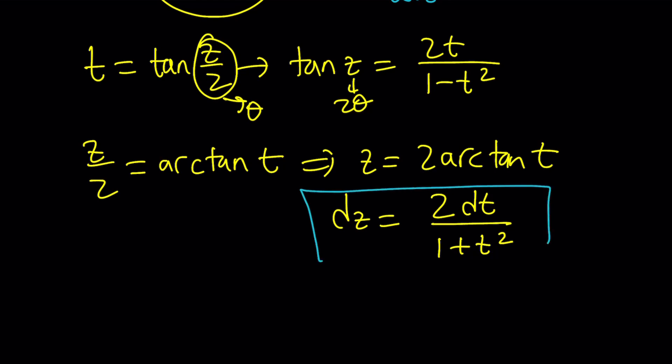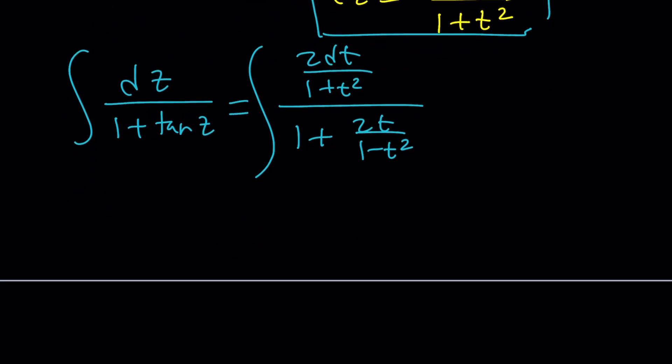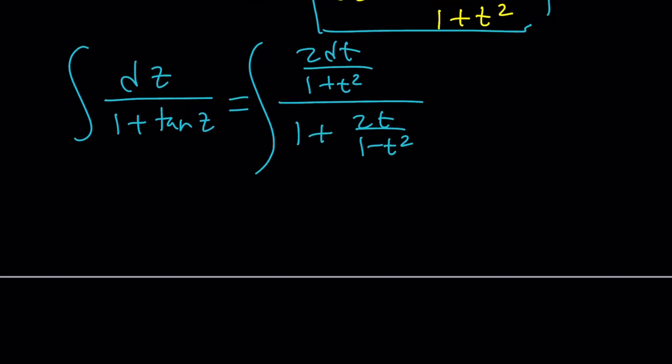and we know what tangent z is in terms of t, and we can go ahead and plug everything in. And that gives us the following. dz over 1 plus tangent z equals 2 dt over 1 plus t squared divided by 1 plus 2t over 1 minus t squared, because that's what tangent z is. Now, our function is, or integral, is with dt. And how do you integrate something like this? This is quite complicated, don't you think?